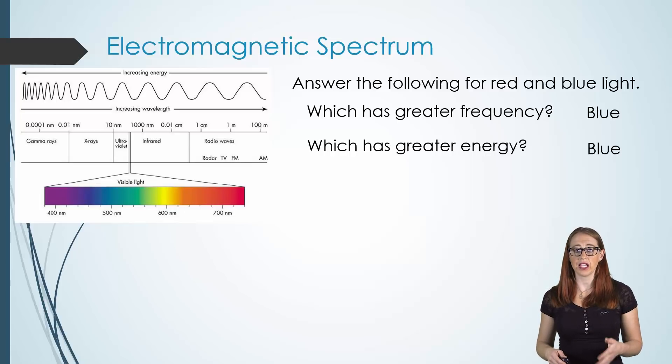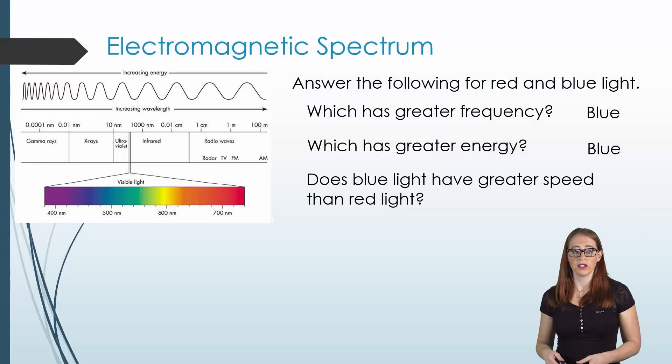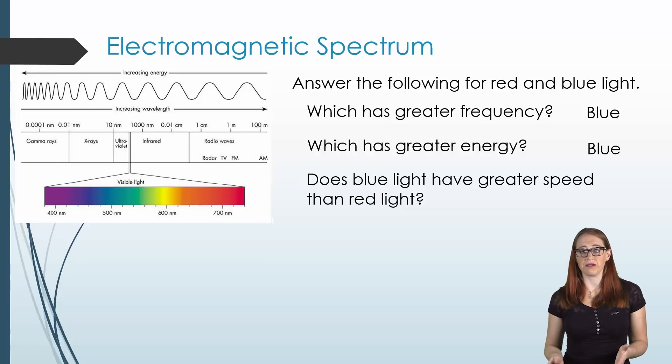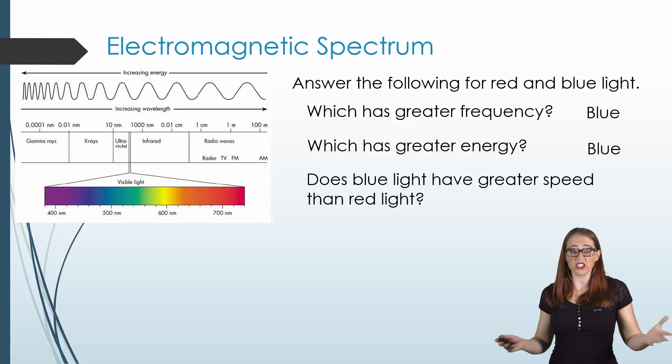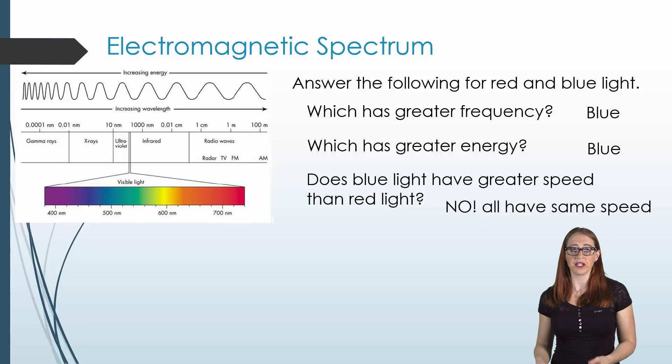Now look at both of them, and which one has the greater speed, blue light or red light? Since we know the speed of light is c, we know that both blue light, red light, actually all forms of light, are going to have that same speed. And so it's not going to be blue light or red light. They're both going to have the same speed, as well as all the other ones.